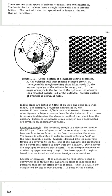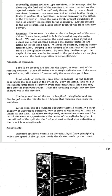The next part of the machine is the leveler or conveyor. It is necessary to have some means of conveying seed through the machine in order to discharge the particles that are not lifted by the indents. In some smaller, shorter cylinder type machines, this is accomplished by elevating the feed end of the machine to allow rejected material to flow uniformly through the cylinder. Most machines use some mechanical means inside the cylinder to perform this operation. A screw conveyor in the bottom of the cylinder will keep the mass level, prevent stratification, and convey the material to the discharge. Another method is the use of grain blades which break up the mass and also convey.